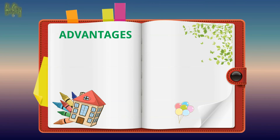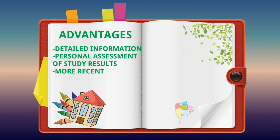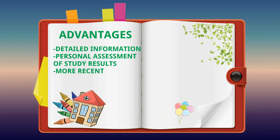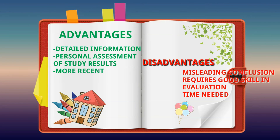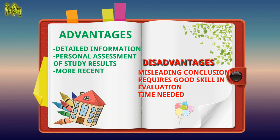The advantages of primary resources include: they contain detailed, original information; personal assessment of study results is included; and they are usually the most recent information — with the same 10-year gap guideline applicable when gathering literature for theses.